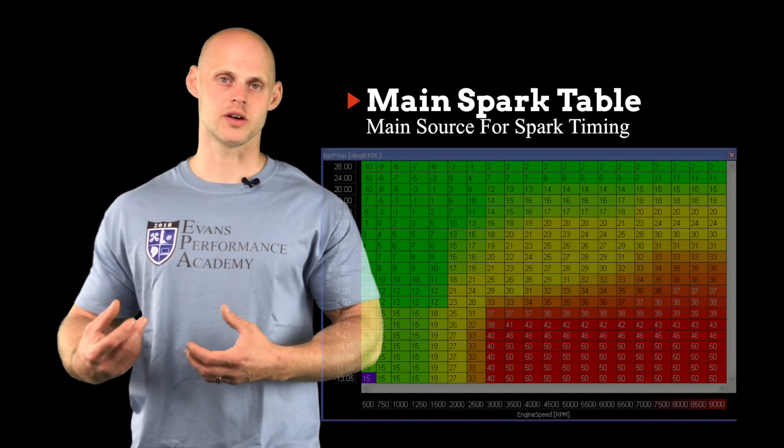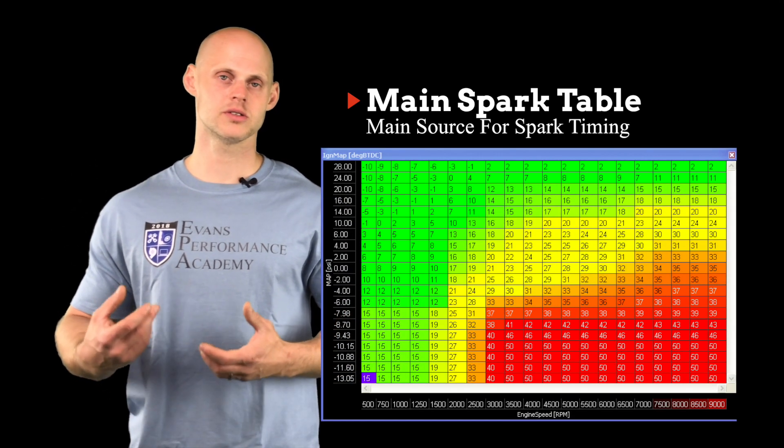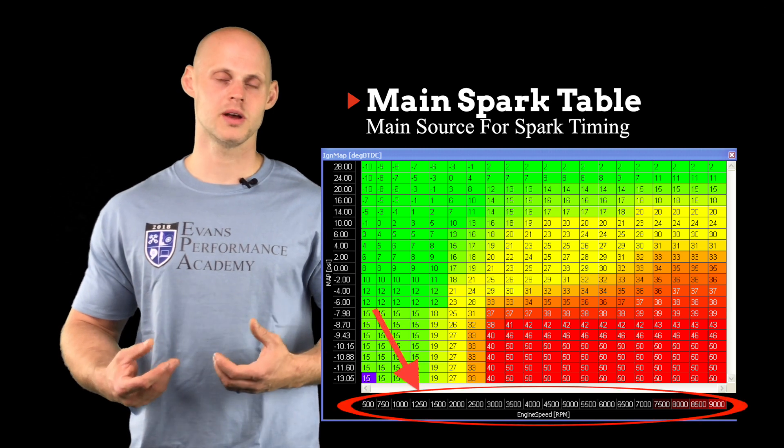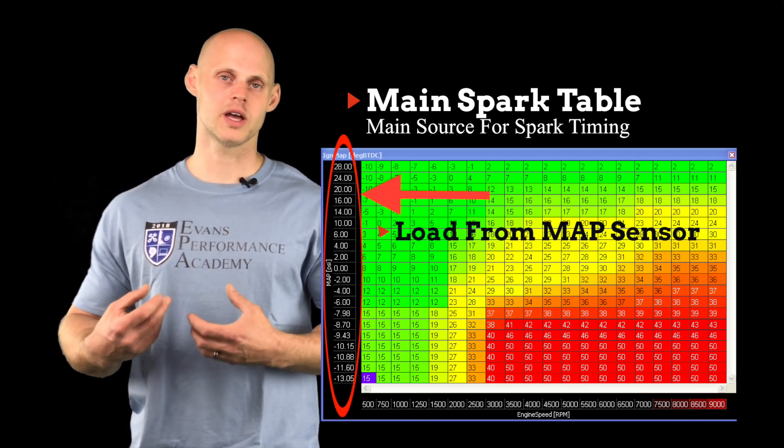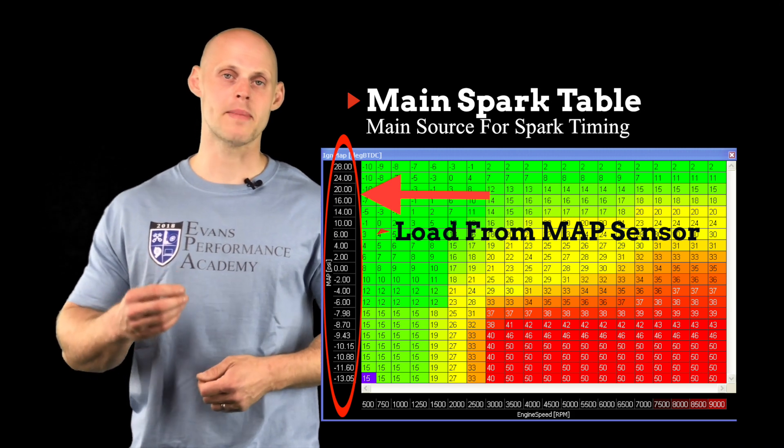So if we look at our table here, we can see that it's a three-dimensional table based on engine RPM and engine load. And our engine load is going to come from our manifold air pressure sensor or MAP sensor.